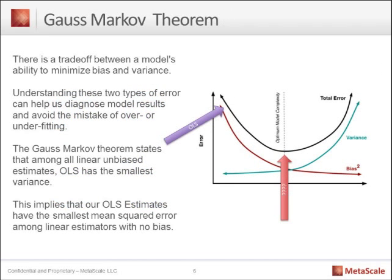Understand that when you make predictions there is a tradeoff between bias and variance. There is a tradeoff between a model's ability to minimize bias and variance. By understanding these two types of error, it can help us diagnose results and avoid the mistake of overfitting or underfitting. The Gauss-Markov theorem, which is a statistical theorem, basically says that when you create an OLS regression, you are minimizing the variance — creating a model that has the smallest variance.